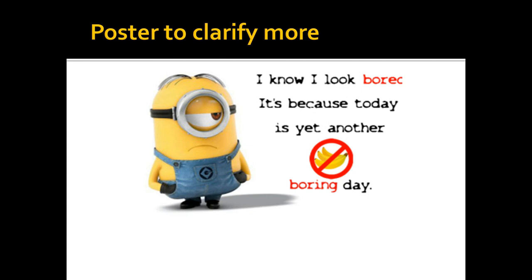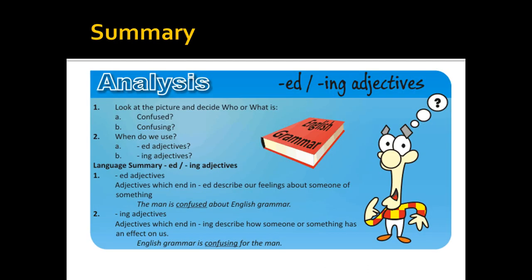Now let's analyze -ed and -ing adjectives. Look at the picture and decide: who or what is 'confused' or 'confusing'? I use 'confused' when I'm talking about this person or this character. I use 'confusing' when I link it to the grammar book — a thing.